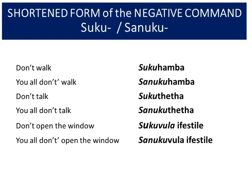In colloquial form, just like in English we shorten 'do not' to 'don't', in Zulu you shorten the prefix. For one person, you use 'suku'; for a group, you use 'sanuku'. So: 'don't walk' to one person is 'suku hamba'; to a group, 'sanuku hamba'. 'Don't talk' to one person: 'suku teta'; to a group: 'sanuku teta'. 'Don't open the window': 'suku vula' or 'sanuku vula' for a group.